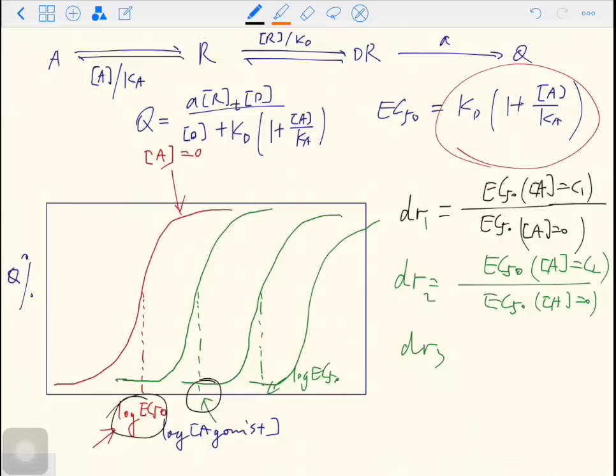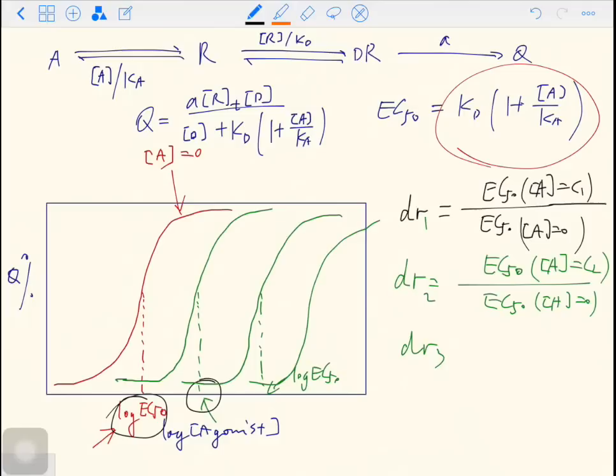In order to have a valid Schild plot, the dose-response curves should be parallel and they need to have the same Q-max. In the Schild plot, log antagonist is on the x-axis. But in the original plot, log agonist is on the x-axis.